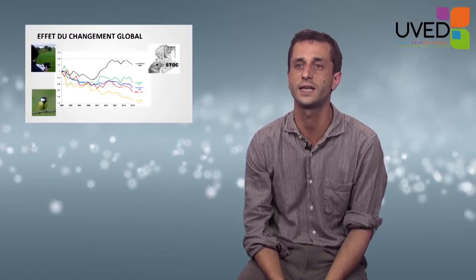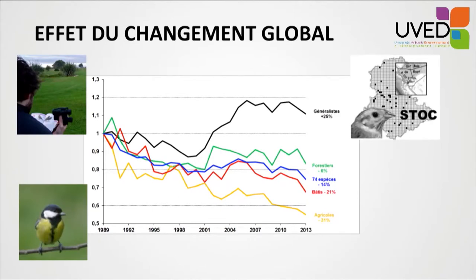This type of monitoring process also exists in France. In France, we have the STOC, which stands for Temporal Monitoring of Common Birds. The indicator was created based on the data. In blue, we have the indicator for all 74 species being monitored. In red, the indicator for bird species that live in built areas. In yellow, for birds who live in agricultural landscapes. In green, for birds who specialize in forest environments. And in black, for the generalistic species — those that can be found anywhere with no preference.